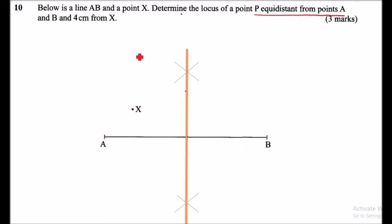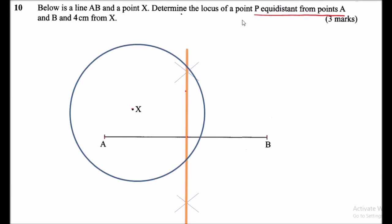Since we are told that point P is 4 centimeters from X, we are going to use X as the center of the circle and draw a circle whose radius is 4 centimeters. This is the circle that I have drawn.